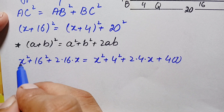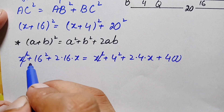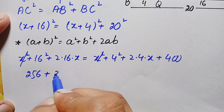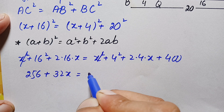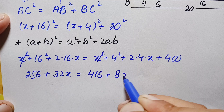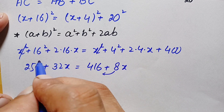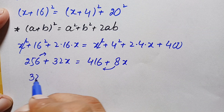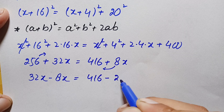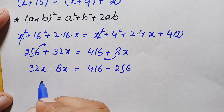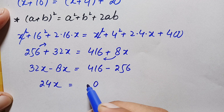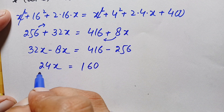Now let's simplify both sides. There is x² on both sides with a positive sign, so we can cancel them. We get: 256 + 32x = 16 + 400 + 8x, which simplifies to 256 + 32x = 416 + 8x. Moving the variable terms to the left and constants to the right: 32x minus 8x equals 416 minus 256, giving 24x = 160.